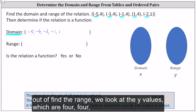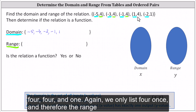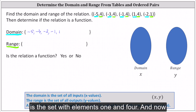And now to find the range, we look at the y values, which are four, four, four, four, and one. Again, we only list four once, and therefore the range is the set with elements one and four.